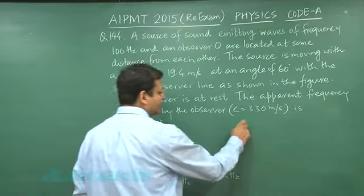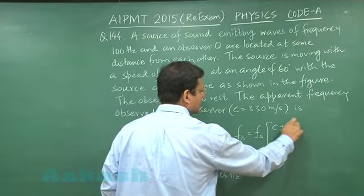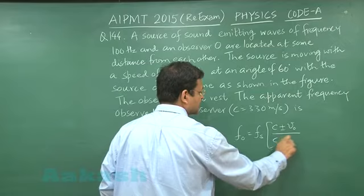Simply use the formula: frequency observed is equal to frequency of the source, c plus minus velocity of the listener, c plus minus velocity of the source.